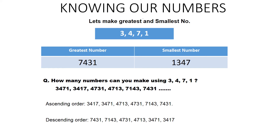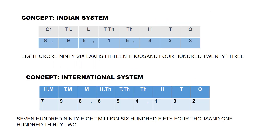Now we will learn the concept of the Indian system and the international system. We are all familiar with the Indian system. Its place values are: ones, tens, hundreds, thousands, ten thousands, lakhs, ten lakhs, and crores.